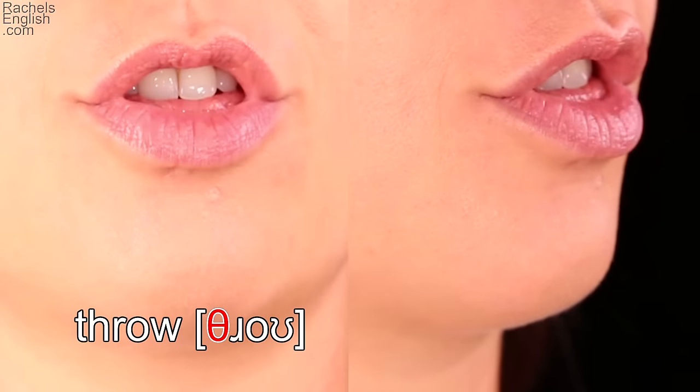Throw. Notice how the lips are starting to flare for the R as the tongue comes through the teeth for the unvoiced TH.